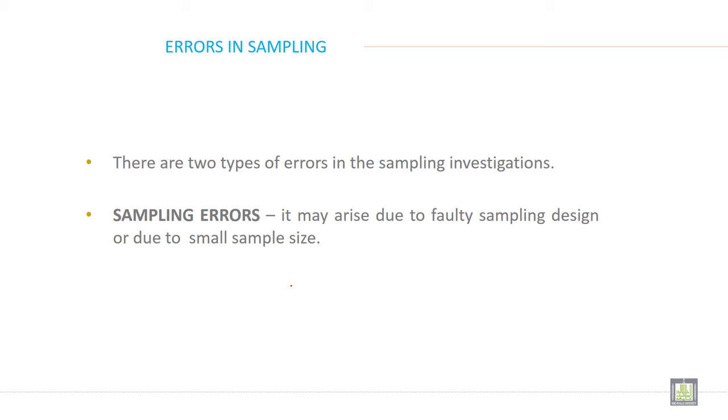There are two types of errors in sampling. The first is sampling error, which may arise due to faulty sampling design or small sample size.